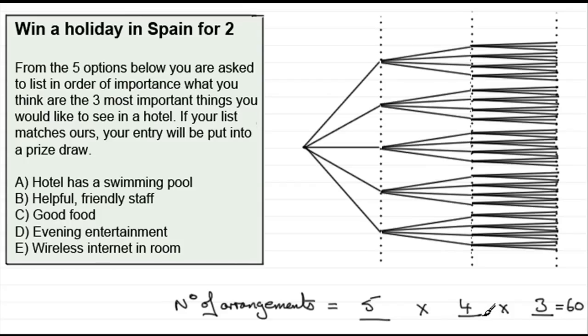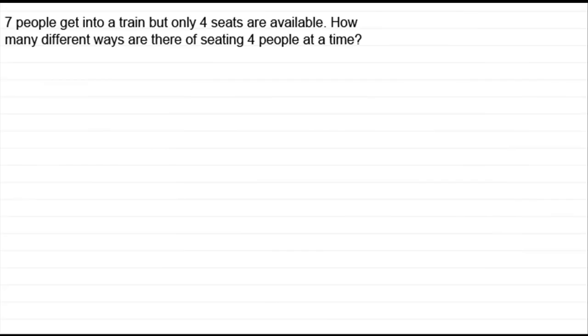OK, so let's see if we can do another example like this. And later I'm going to show you how you can use your calculator, there's special buttons on your calculator, to simplify and speed up the working. Well, for my next example, seven people get into a train but only four seats are available. How many different ways are there of seating four people at a time?